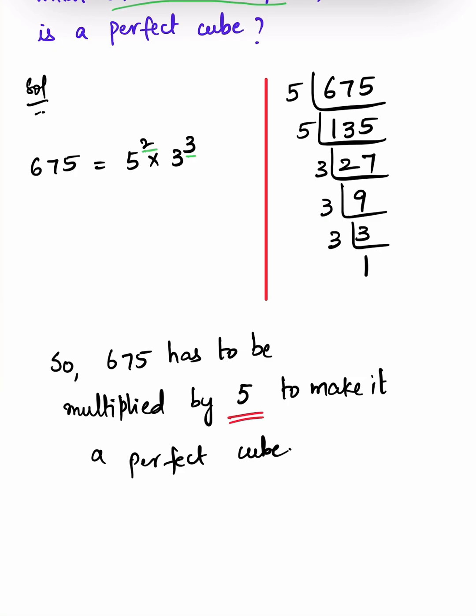So 5 is the smallest number to multiply 675 with to make it a perfect cube. Like, share and subscribe for more interesting maths videos.